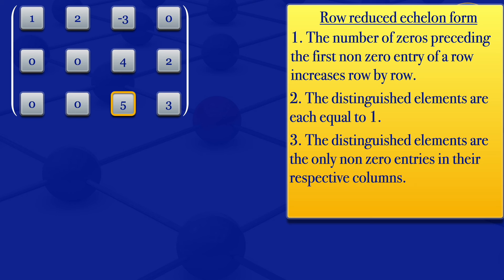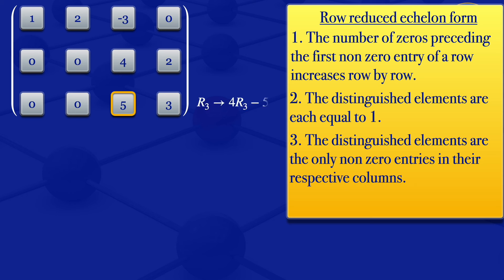To get a zero there, we can try to use row number two, because on row two we are having a four, but here we are having a five. So what we can do is multiply those rows by a scalar so they have the same value. If we multiply row two by five, it gives us 20; row three multiplied by four gives us 20. Then we subtract — 20 minus 20 gives us zero. So the row operation is row three transforms to four times row three minus five times row two.